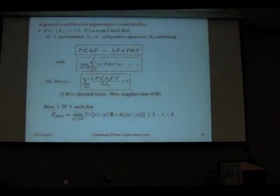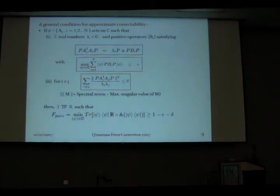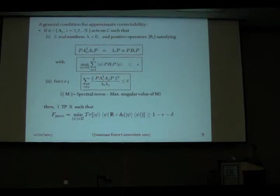Question from audience: It seems like the fidelity decreases with the number of Krauss operators. You can understand it by looking at the way the conditions are written out. What is bounded is actually the sum of all these overlaps, and it turns out that this pays off — that is why one is able to get rid of any factors of the number of Krauss operators or code dimension.